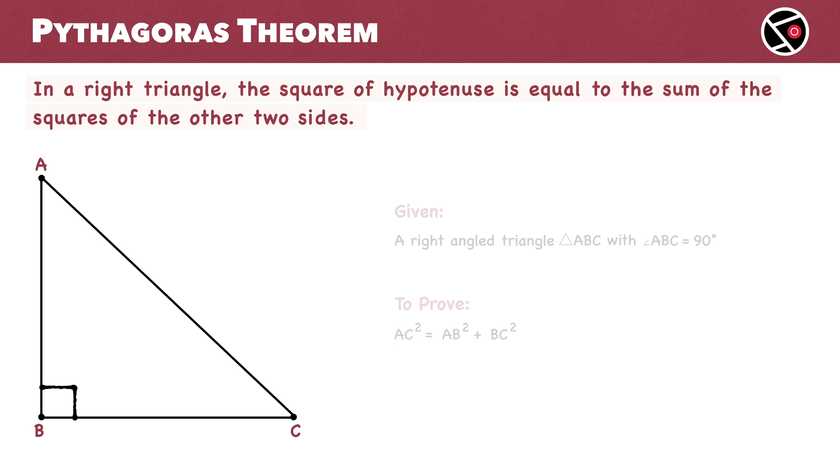Now, let's move to the proof. First, draw BD perpendicular to AC. Next, consider triangles ABC and BDC.